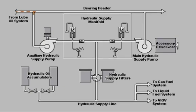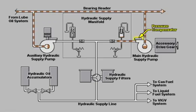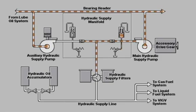When the gas turbine is operating at 100% speed, the main hydraulic supply pump takes lube oil from the bearing header and delivers it to the hydraulic supply manifold under very high pressure. The pressure compensator in the main hydraulic oil supply pump regulates the output pressure of the pump. The output from the hydraulic supply manifold is filtered in the active hydraulic supply filter.